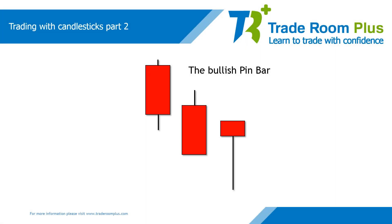A bullish pin bar is the same but the opposite way around — it will be found after a bearish move. There can be a nose on pin bars, but they must be small. Even with a small nose, the tail wick is still at least two times the length of the body. After a bearish move, the pin bar will appear, suggesting the bulls — who want to see the market rise — have taken control of price momentum. These pin bars are practically the same as other reversal candles, such as hammers and hanging men.